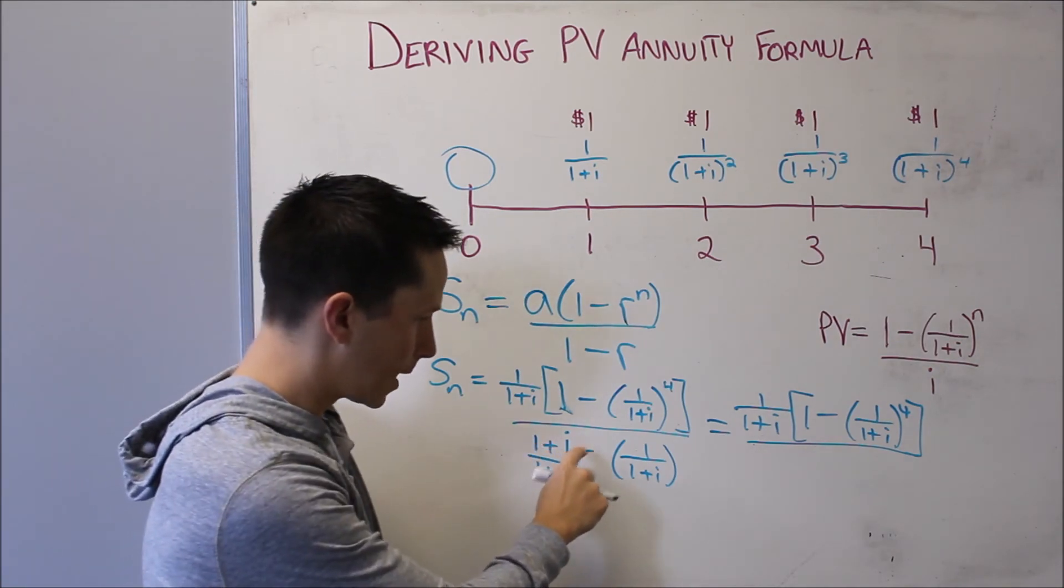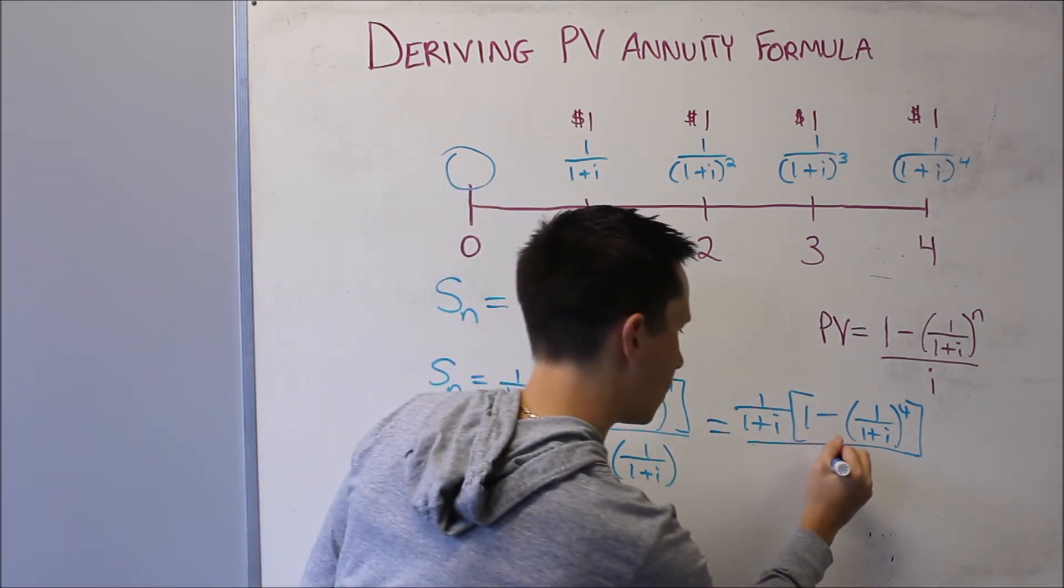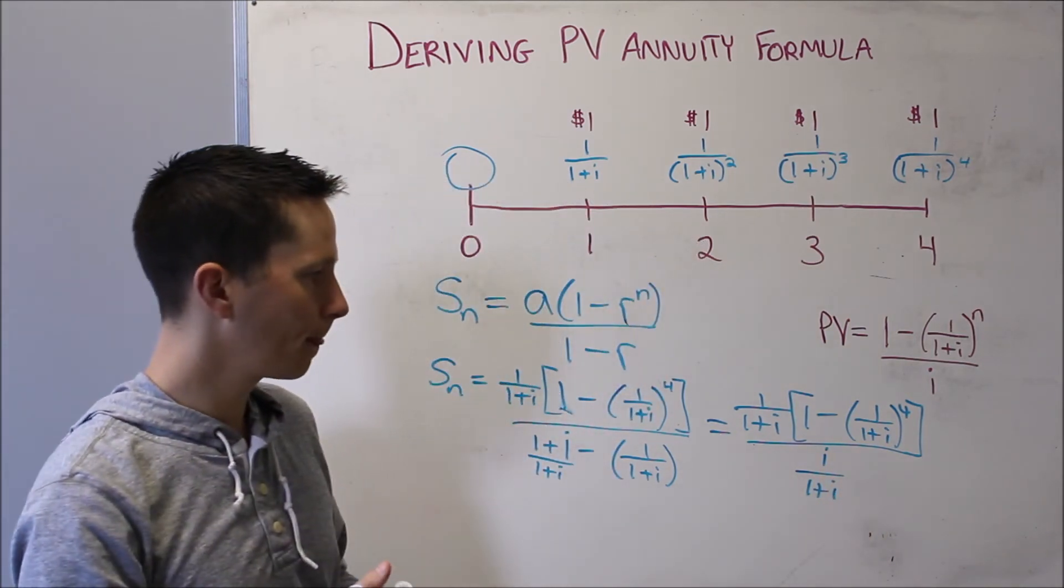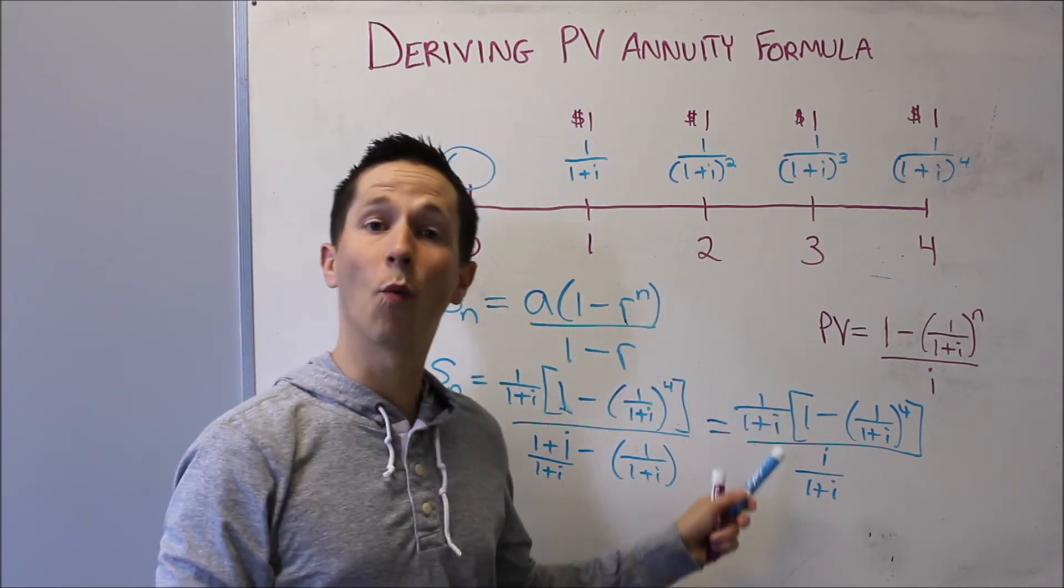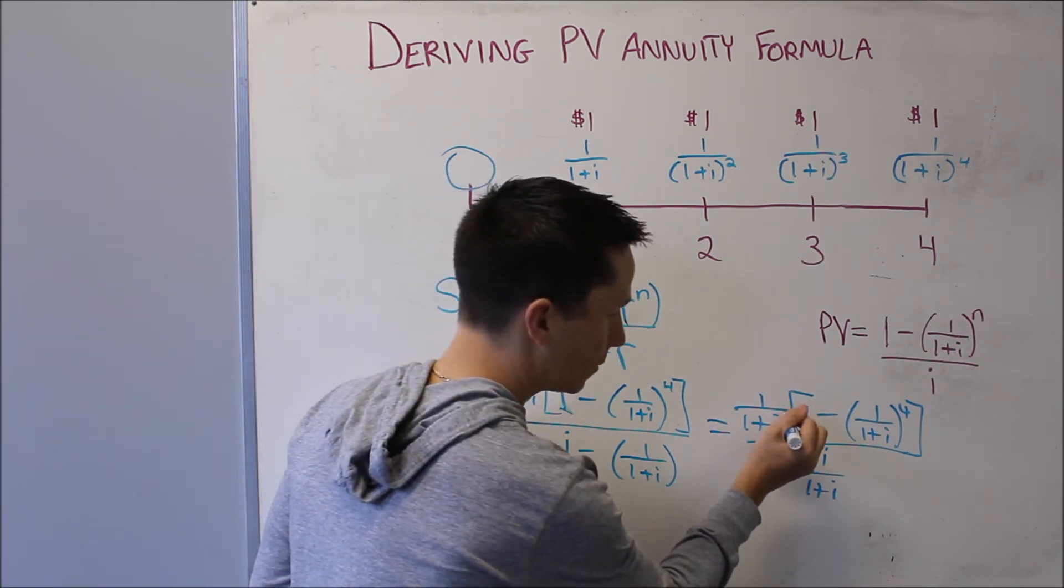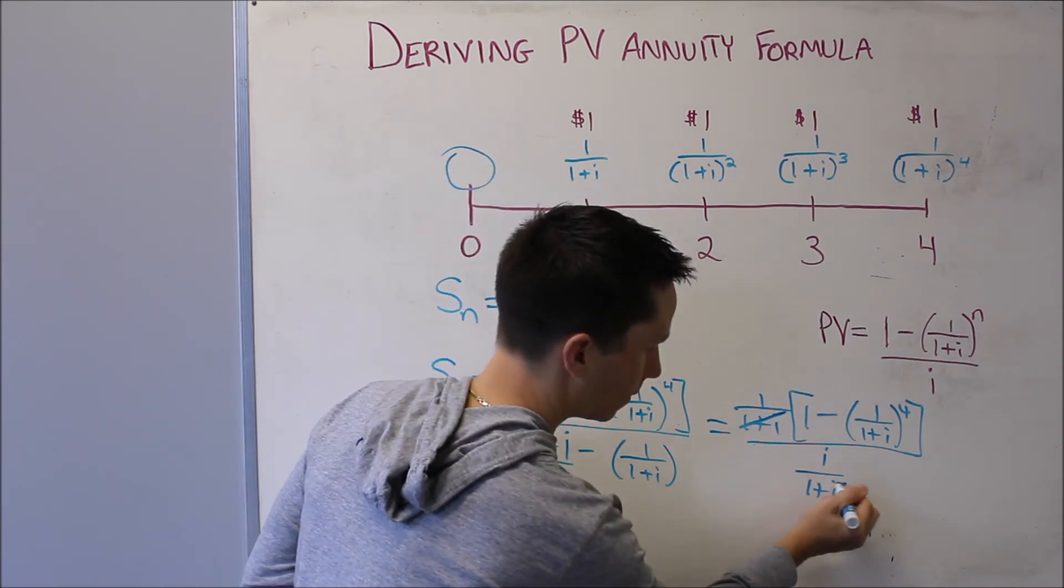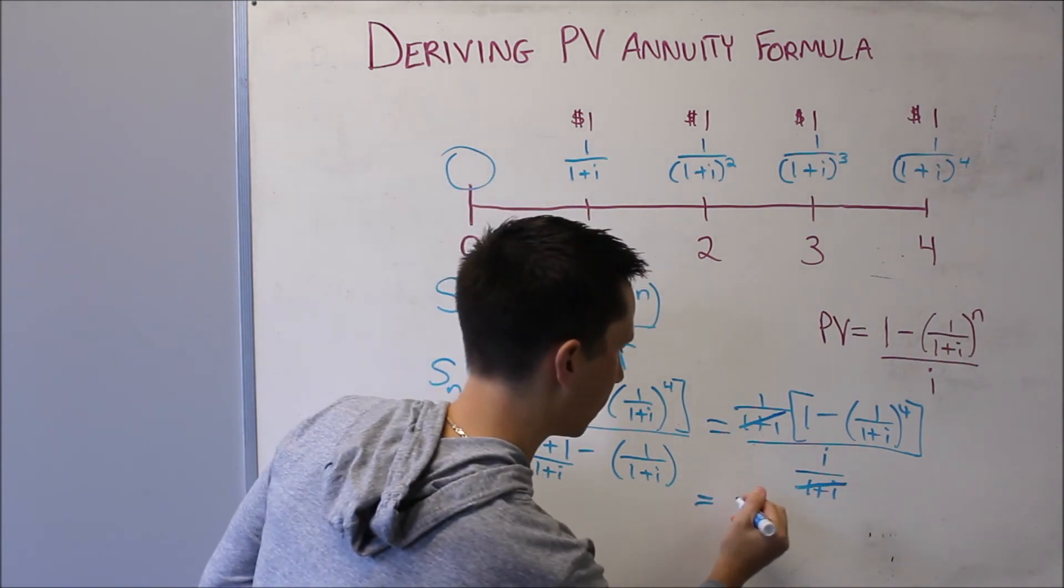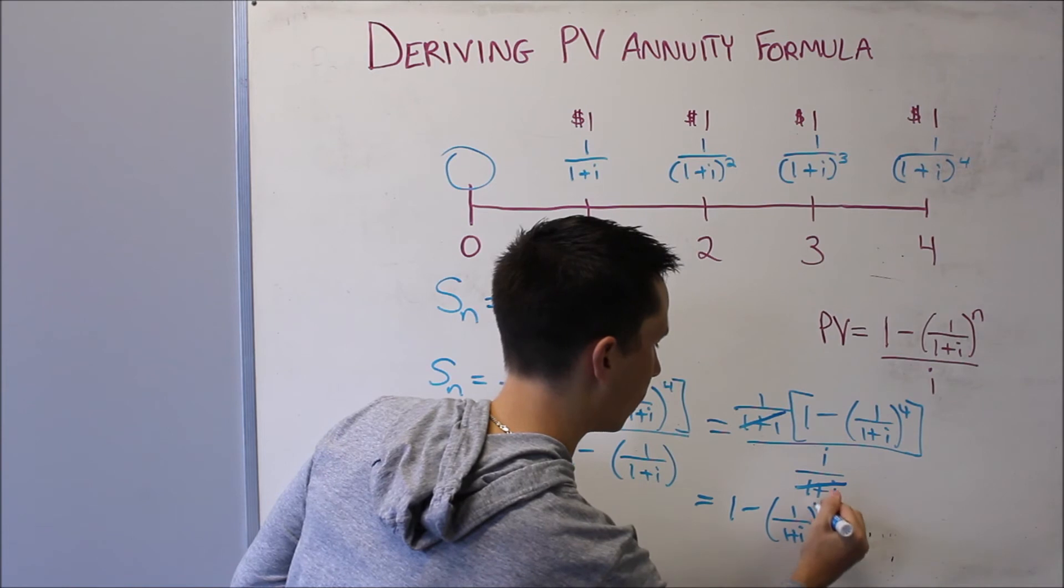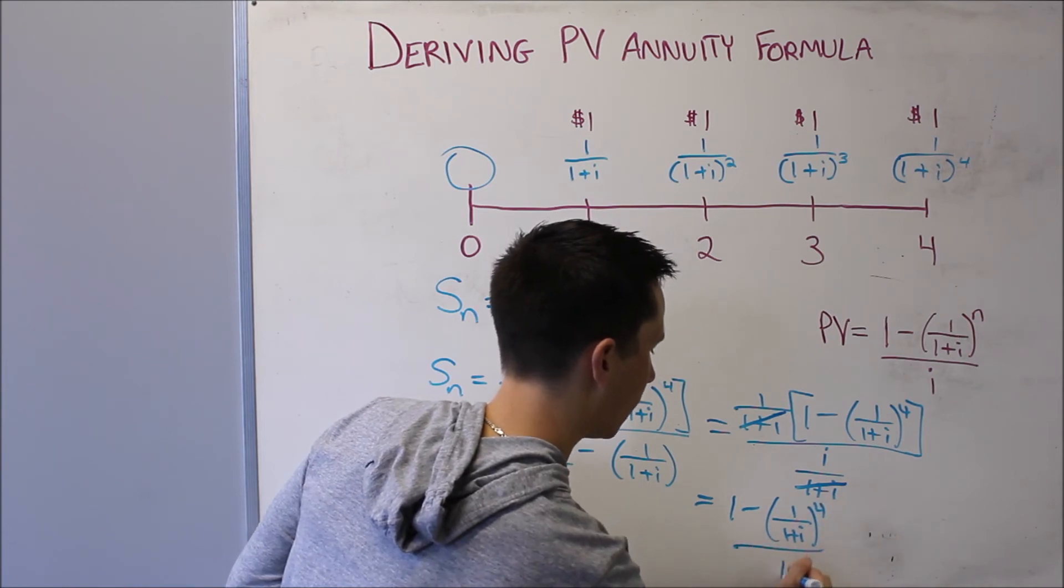Again, this becomes 1 plus i minus 1 is just i over 1 plus i. Now because we've got 1 over 1 plus i on top and i over 1 plus i on the bottom, those can just cancel.